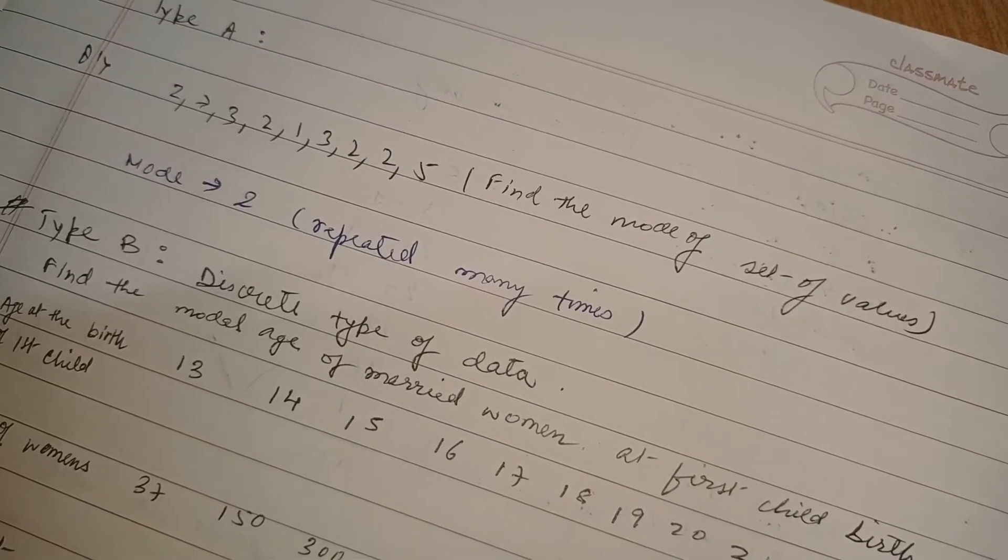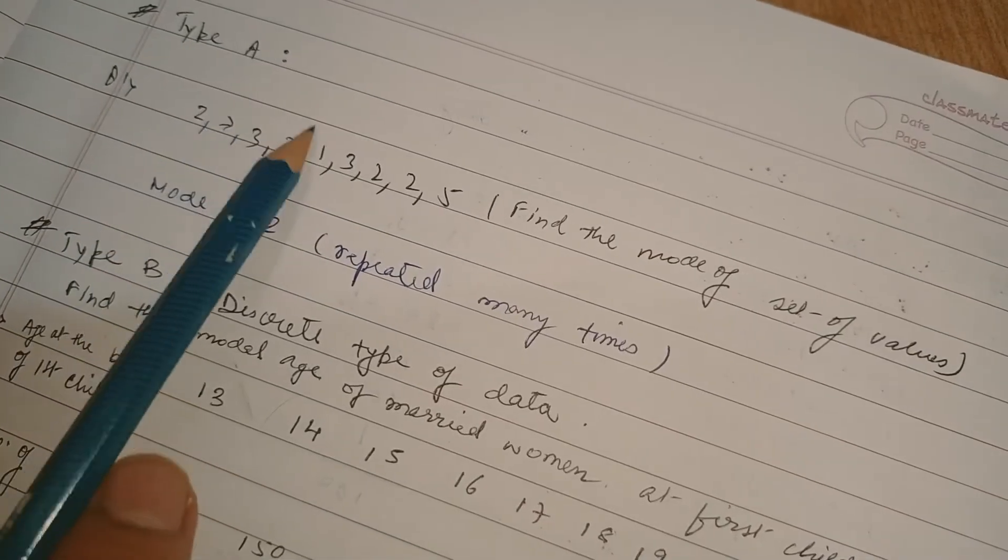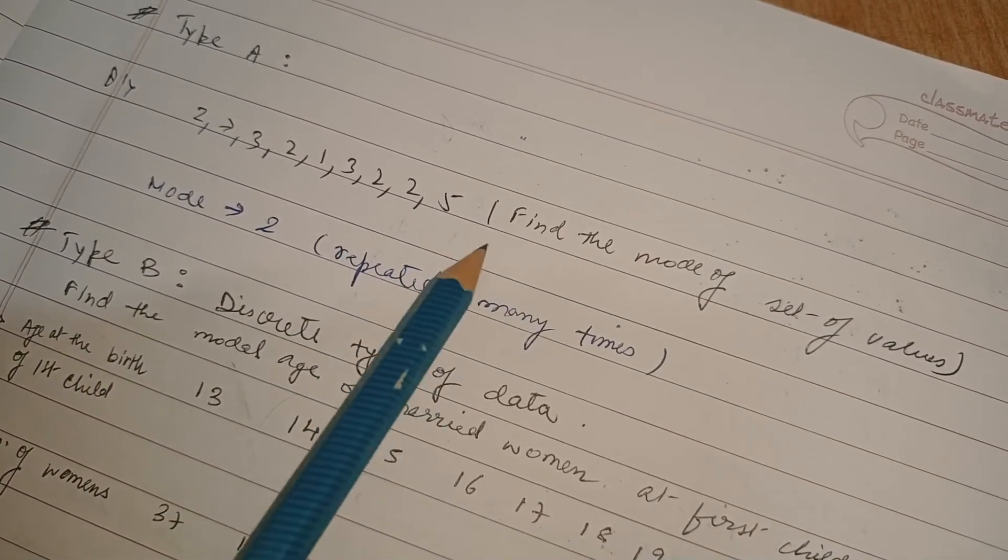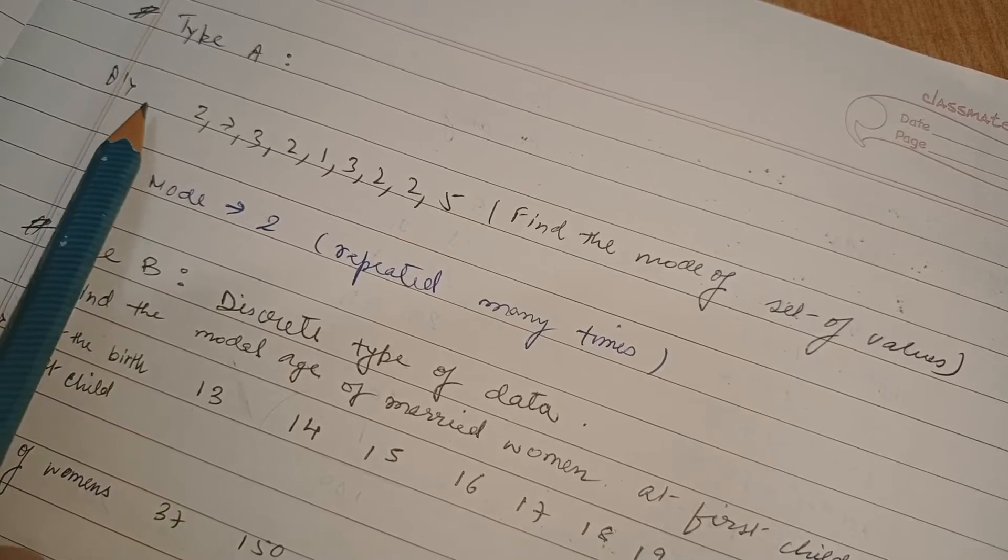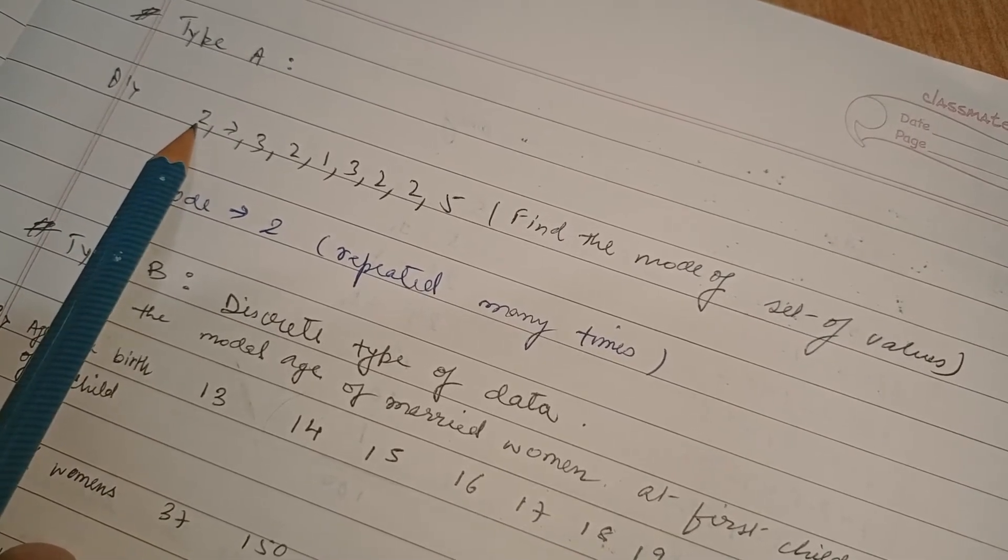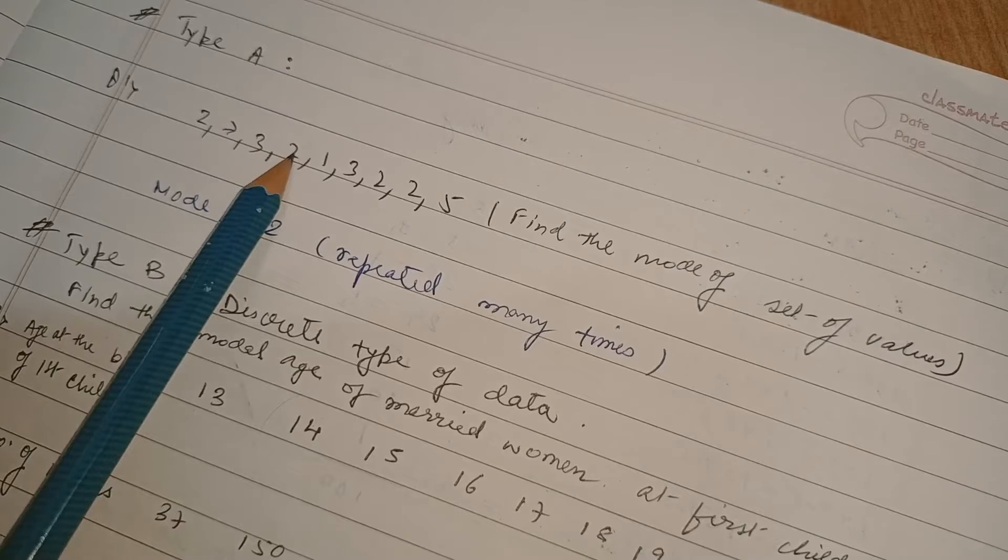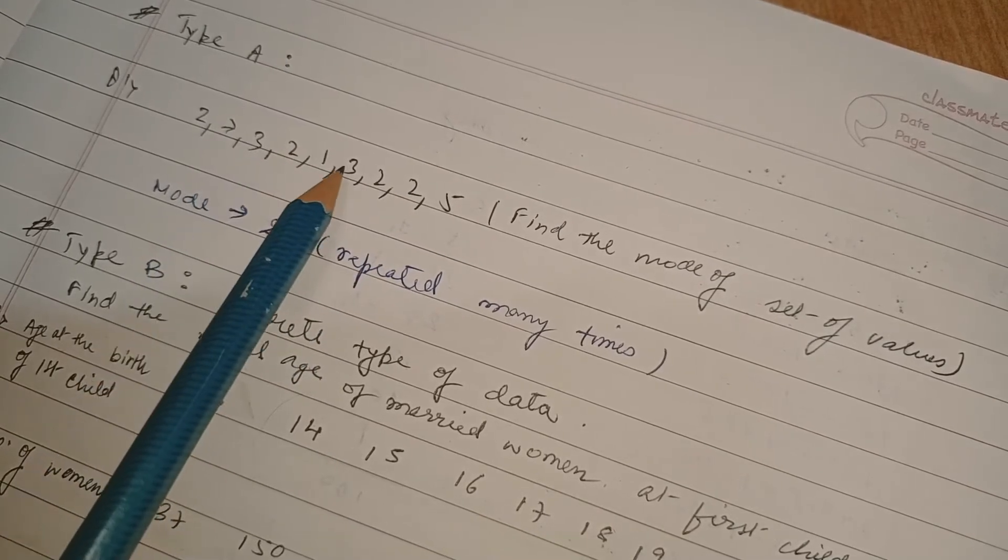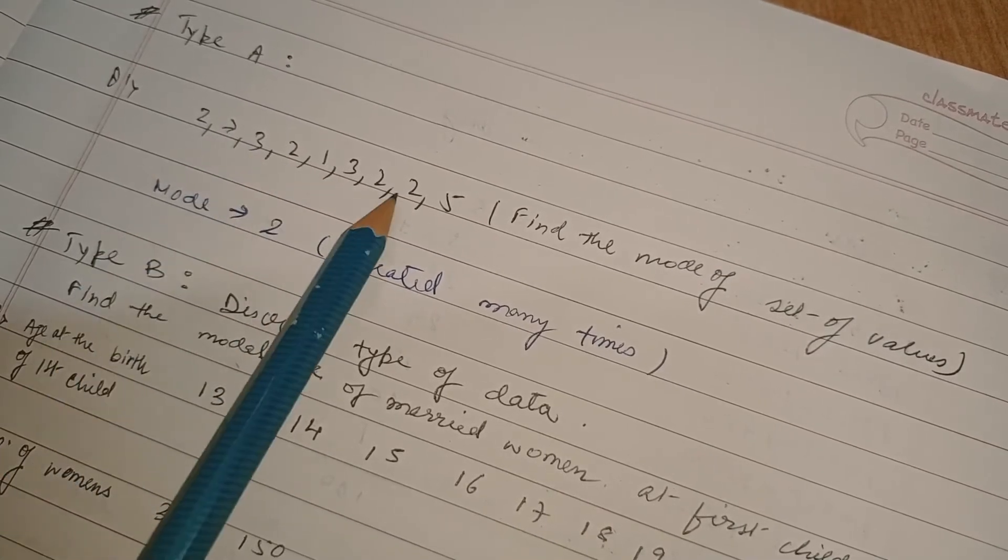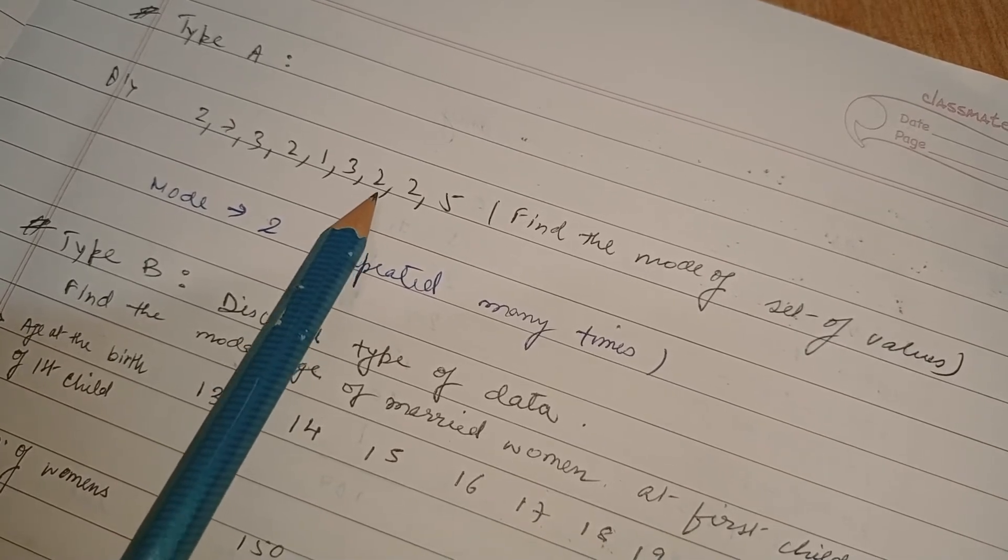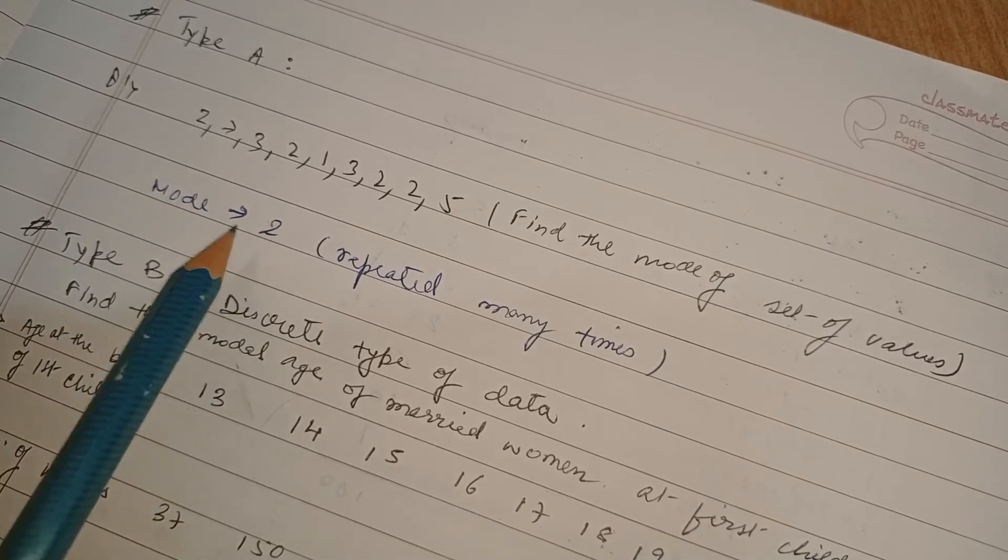Now let us proceed with problem solving. Type A is raw data. A few data are given, find the mode. See which number, which observation is occurring most frequently, that is repeated many times. Two comes four times, three comes two times, so which number occurs most frequently? That is two. So our mode is two.